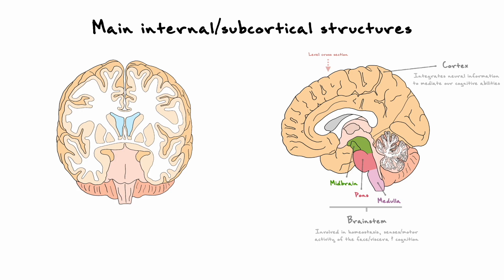Right next to the brainstem, we can also see the cerebellum, which interacts with the rest of the central nervous system to help mediate and coordinate movements. It is also involved in motor learning and other cognitive abilities such as language and memory. As such, many projections go in and out of the cerebellum to interact with the spinal cord, brainstem, and cortex.